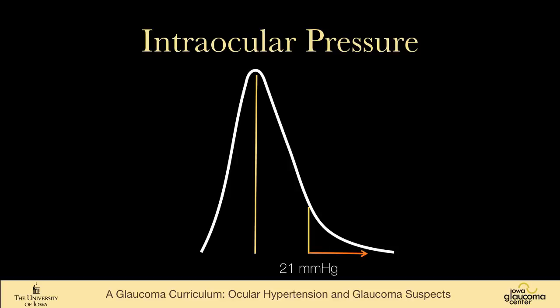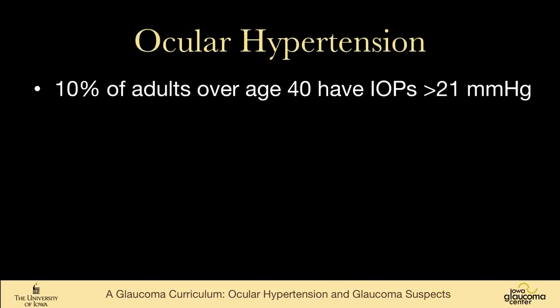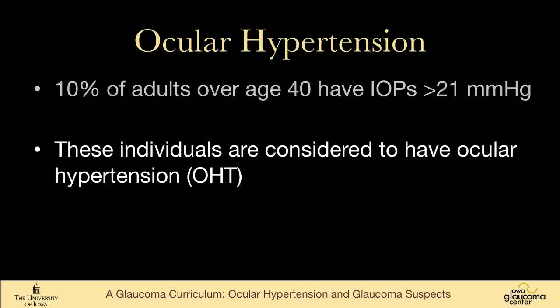So we call those people ocular hypertensives. They don't have glaucoma necessarily, but they have pressures outside the average range. That includes 10% of adults over 40 who have pressures over 21 millimeters of mercury — we call them patients with ocular hypertension.